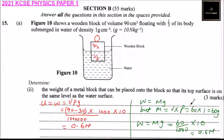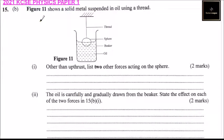So you can either use this method or you can use this method. Both of them, you will be able to arrive to the same answer. Let's go to the next part, question number 15B. Figure 11 shows a solid metal suspended in oil using a thread. So we have the thread, the sphere, the beaker, and the oil.